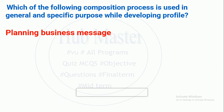Our question is: which of the following composition processes is used in general and specific purposes while developing a profile? When we develop a profile, there are different purposes — personal or business. We choose planning business messages, because in composition there are two things that come in general and specific.